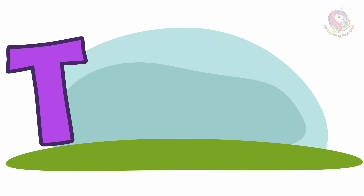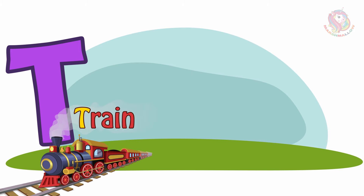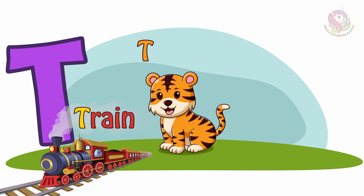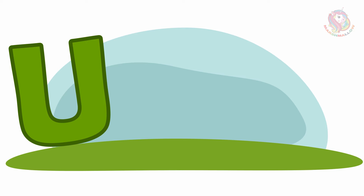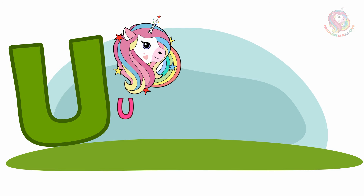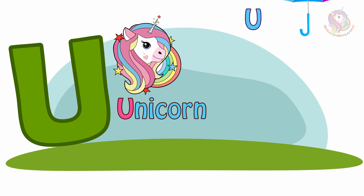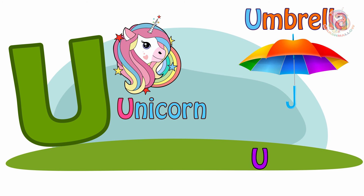T - T is for Train. T is for Tiger. T is for Turtle. U - U is for Unicorn. U is for Umbrella. U is for Up.